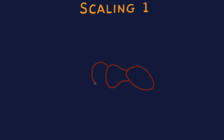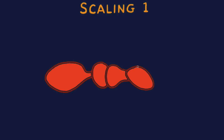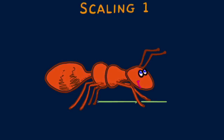Never mind those Hollywood movies of super ants and other creatures scaled up to huge sizes. An ant is strong for its size — it can lift many times its own weight with ease. But if it was scaled up to the size of an elephant, it wouldn't be able to lift itself off the ground. Its legs would be too thin to support its weight.